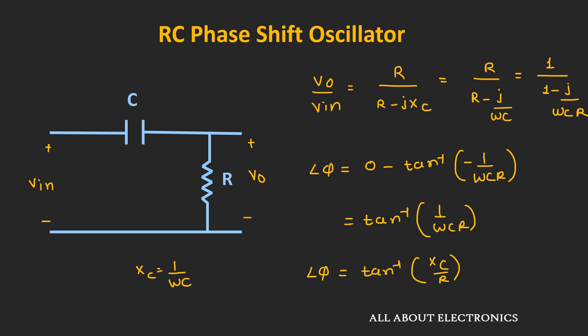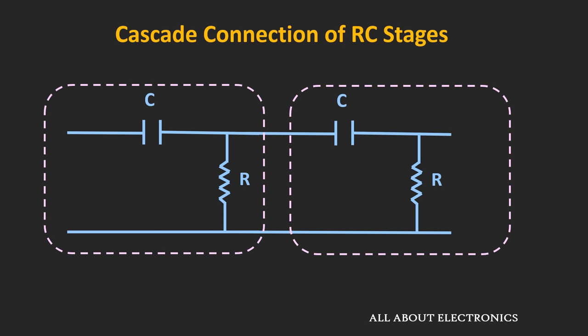Theoretically, to get a 180 degree phase shift, we need to cascade two such circuits, each providing 90 degrees. But to get 90 degrees of phase shift, the value of R would need to be very small or theoretically zero. When R is zero, the gain provided by the circuit equals zero. So practically, it is not possible to achieve 180 degrees of phase shift using just two RC stages, and we require more stages.